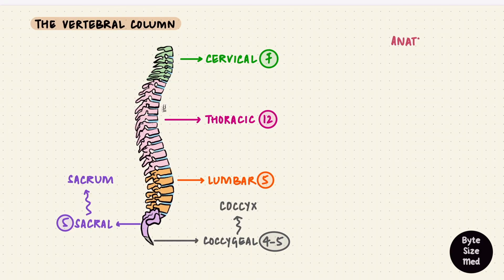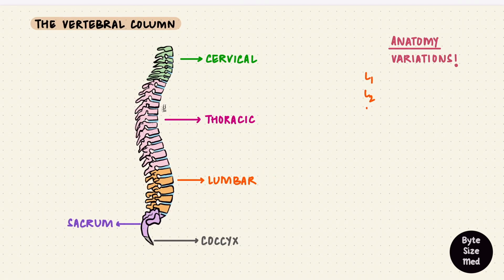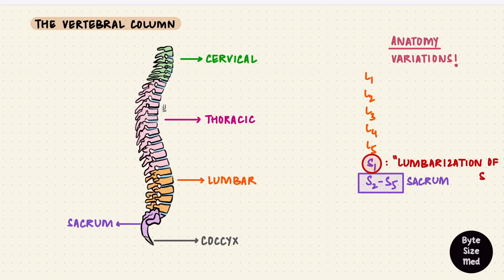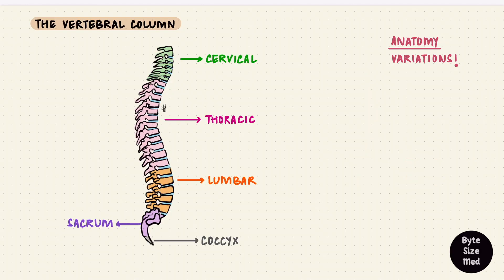Just like a lot of things in human anatomy, the number of vertebrae can vary. Sometimes part of the fifth lumbar vertebra might fuse with the sacrum — this is said to be sacralization of L5. Instead, if part of the first sacral vertebra stays separate, it's said to be lumbarized. It's always good to remember that anatomy varies.